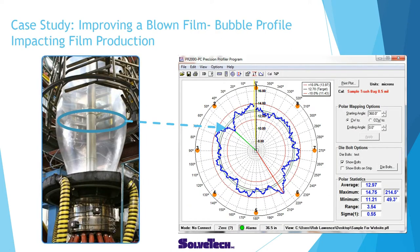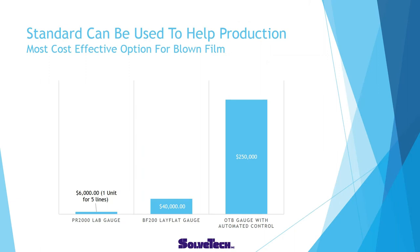Here's another case study about how someone can use this technology and standard to improve quality during production. We have a blown film line and we're going to profile the thickness around the bubble, then overlay the die-bolt pattern. This is really helpful for people who didn't have gauges on the line. If you don't have full automated bubble control — just a regular standalone blown film line with no gauging — this is the most cost-effective way to get big process improvements quickly. If you had five lines and brought one profiler, that's only $6,000 per line.